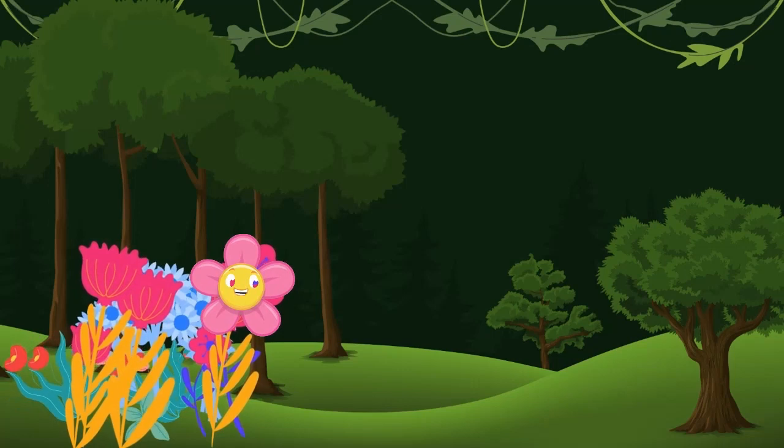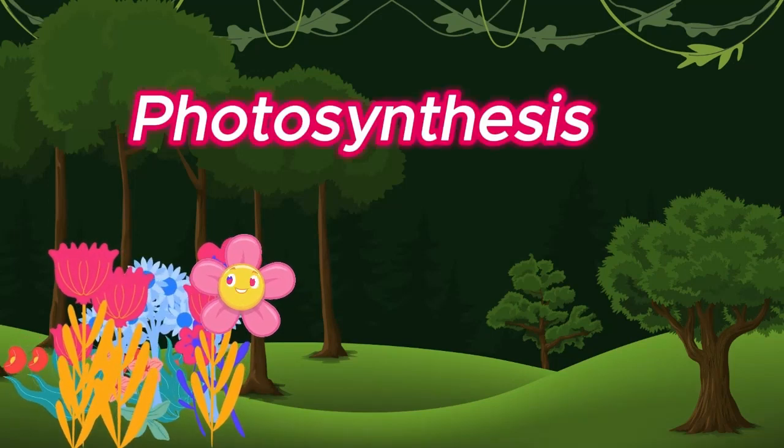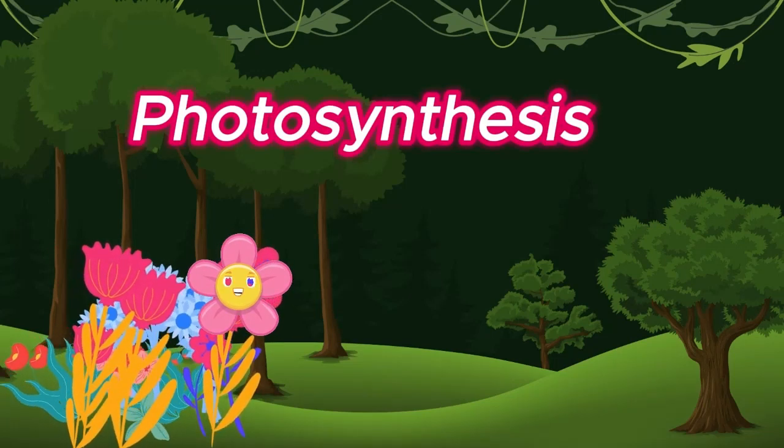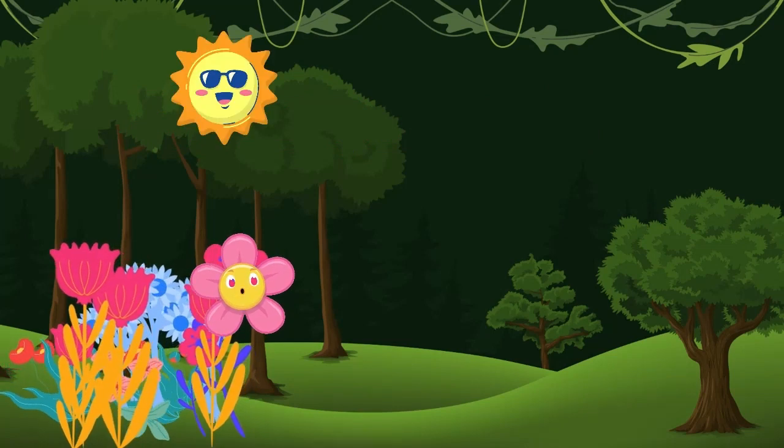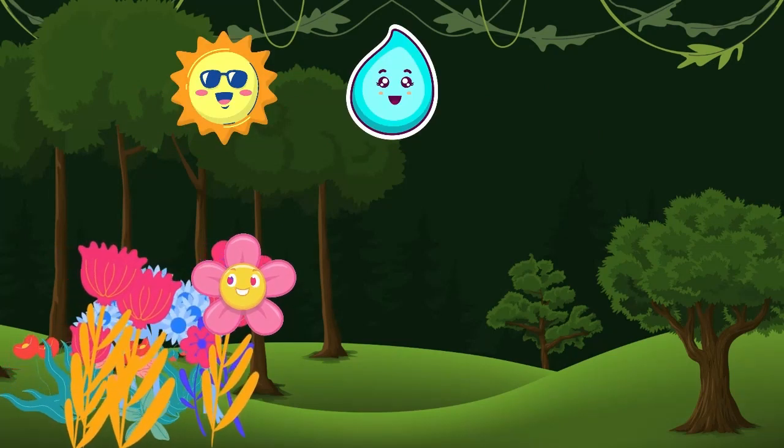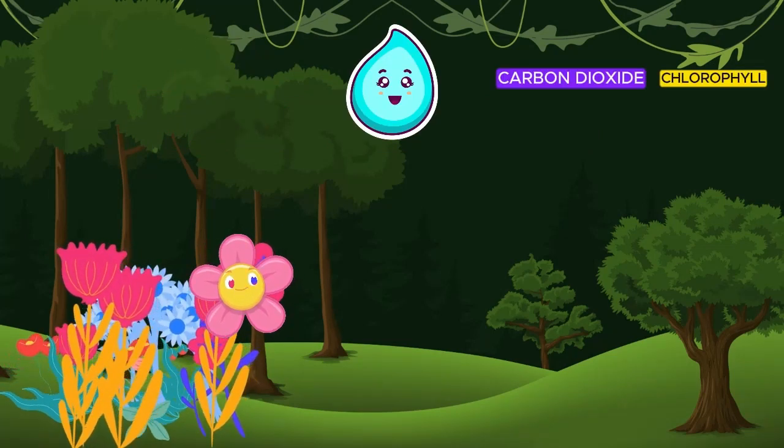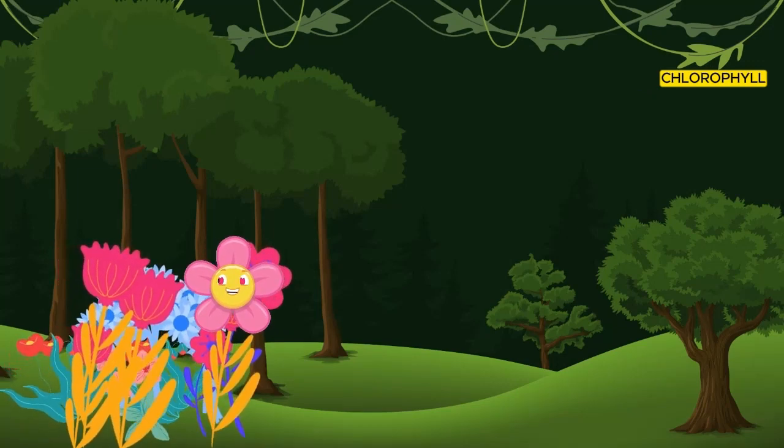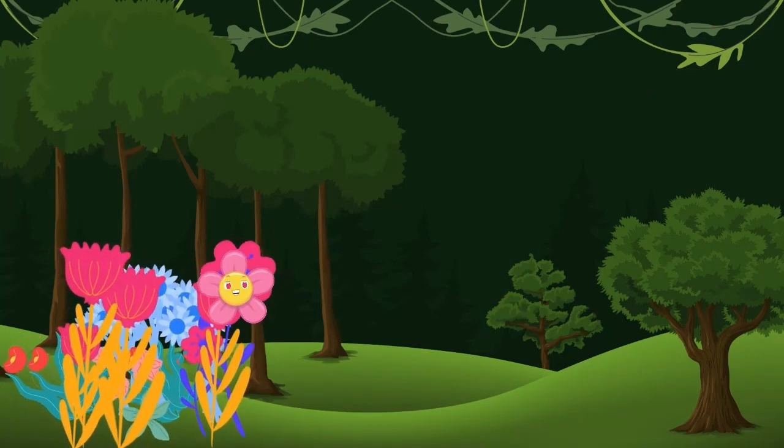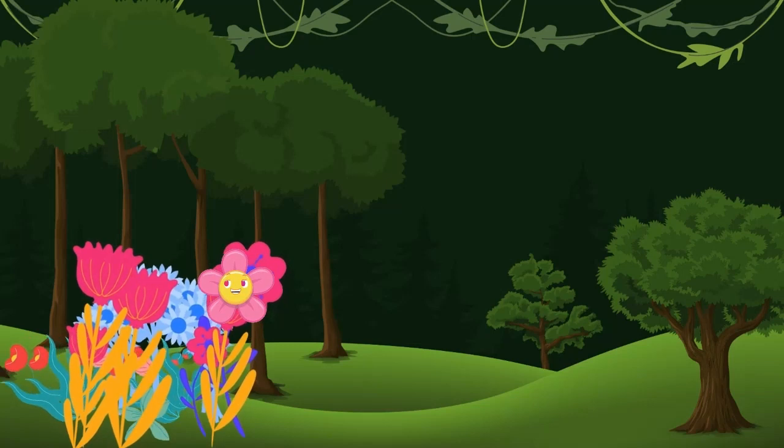The process we take to make food is called photosynthesis. And what we will use to make food are: number one, sunlight, number two, water, number three, carbon dioxide, number four, chlorophyll. First, we must know what photosynthesis is. The process by which plants use sunlight to make their own food.